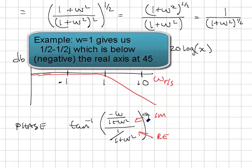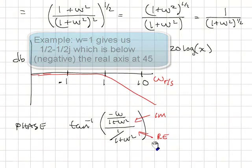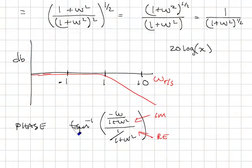So here is the imaginary part, the y-axis part, divided by the real part, the x-axis part. Take the arc tangent and I come up with a phase. And then I plot that.